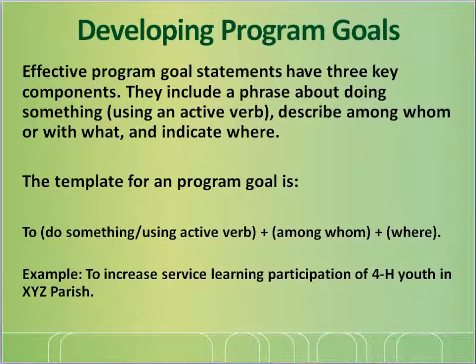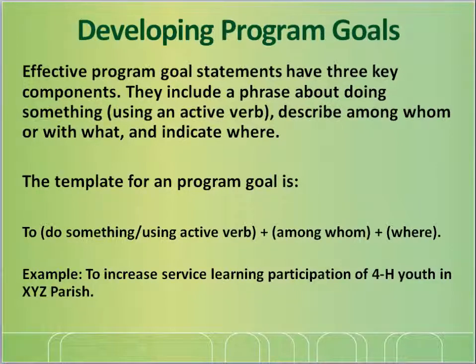Effective program goal statements have three components: a phrase about doing something using an active verb, a description of among whom or with what, and an indication of where. The template for a program goal is: to do something using an active verb, plus among whom, plus where. An example would be to increase service learning participation of 4-H youth in XYZ Parish. Another example is to establish a Master Gardener program for residents in XYZ Parish. Take a moment to review the project goals worksheet that you printed out at the beginning of this webinar — it can help you develop your own program goals.